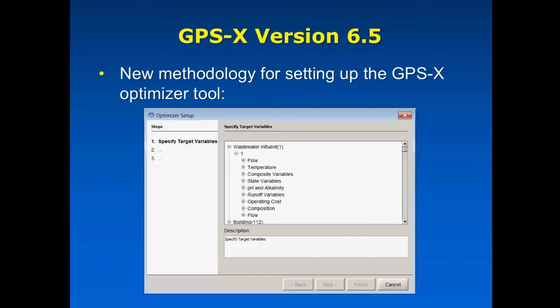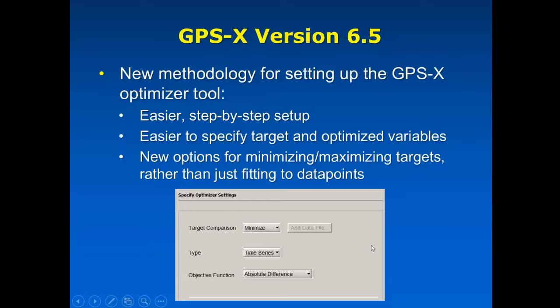I will also mention that we have changed the methodology for setting up the optimizer in GPS-X. So it used to be sort of a multi-step process to identify the variables that you're trying to optimize and the targets and setting up the data that you want to be able to fit to. So we have now replaced that with this methodology here, which pops up this window for optimizer setup. You can go through a step-by-step process. It allows you to select the variables from this menu right inside this window. You can specifically say, I want to minimize something, like minimize total nitrogen in my effluent or maximize some sort of efficiency.